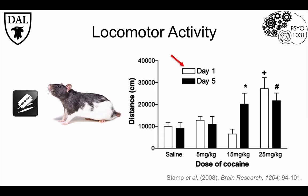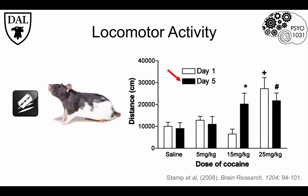Average movement on day one for different doses is shown by the white bars, and it's clear that it takes a dose of 25 milligrams per kilogram of cocaine in order to get an increase in movement in drug-naive rats. The black bars show average locomotor activity after five days of the same dose of cocaine. After four previous days of drug experience, it only takes a dose of 15 milligrams per kilogram to see an increase in movement. Although it's impossible to tell if the rats find cocaine pleasurable, these behavioral measures suggest that rats become more sensitive to the locomotor effects of cocaine with repeated exposure.